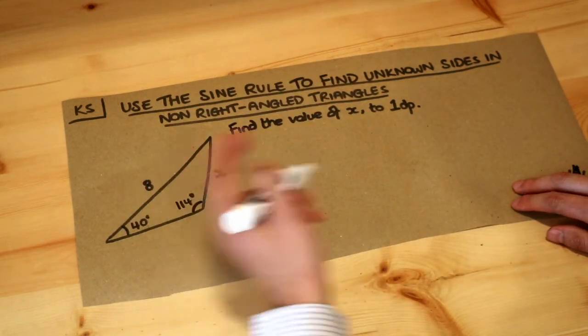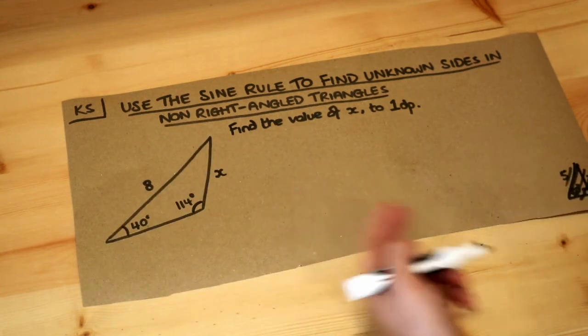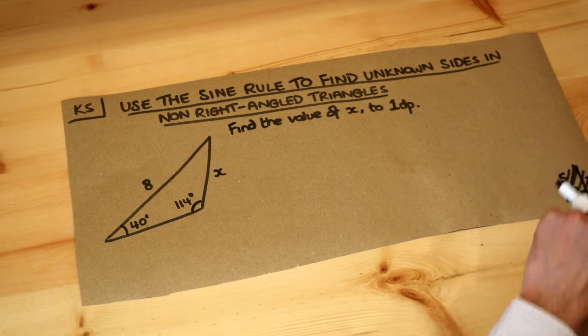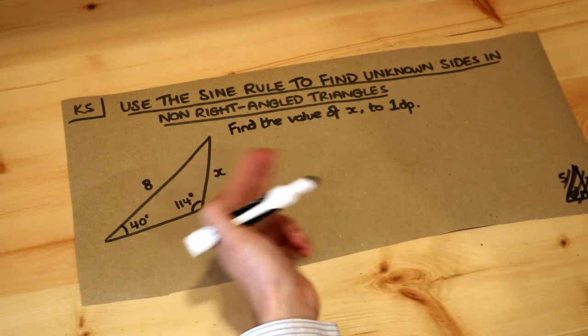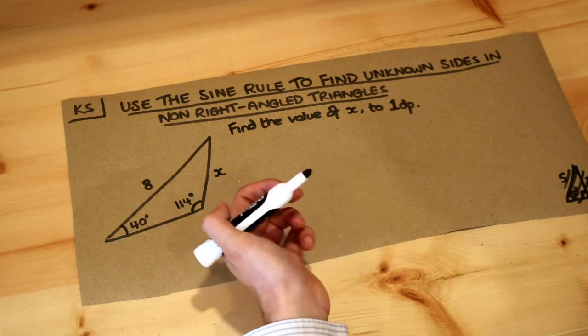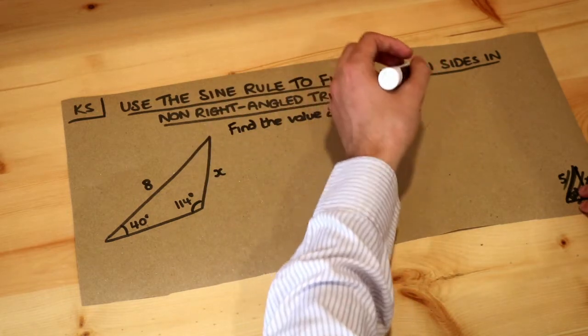Just before I introduce the formula, I need to tell you how we label the sides of this triangle. For right-angled triangles we'd have a hypotenuse, an opposite, and adjacent, but it's not so clear here. We only have a hypotenuse when we have a right-angled triangle, so this is how we label the sides.